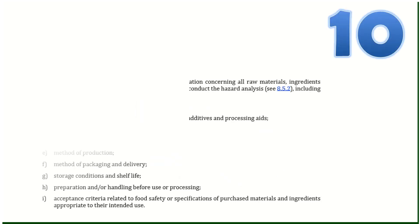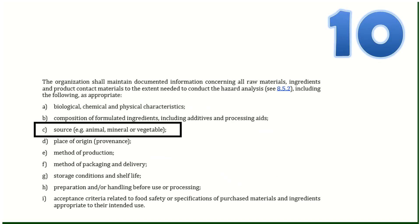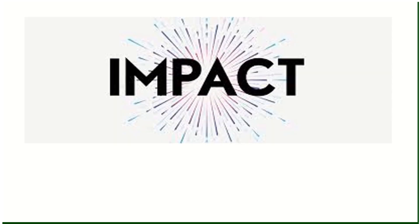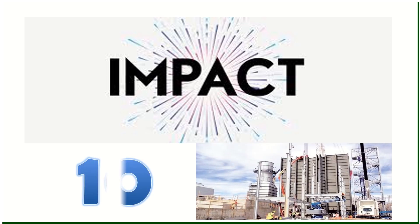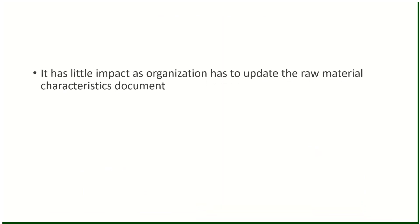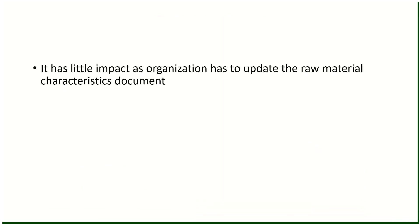Change number ten: within the characteristics of raw materials, ingredients, and packaging, the source of each product now also needs to be defined and documented — this was not required in the previous version. Impact: little impact, as the organization has to update the raw material characteristics document.